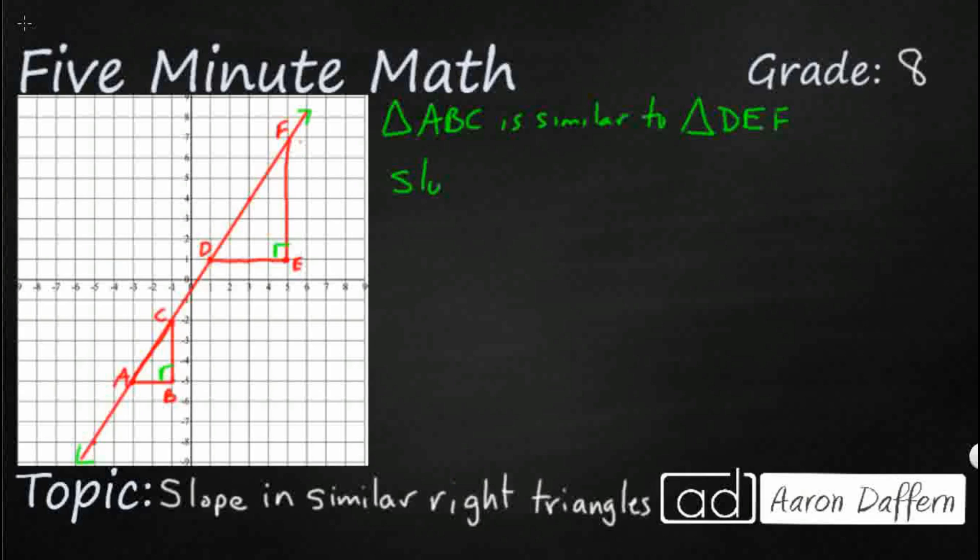Remember slope is the change in y. So that delta is also used for the change symbol over the change in x. So that also equals y sub 2 - that means one y coordinate - take away the first y coordinate y sub 1, over x sub 2, or the one x coordinate, take away the second x coordinate.